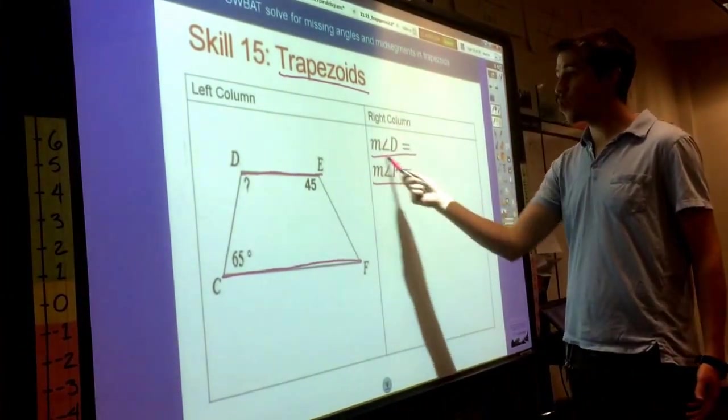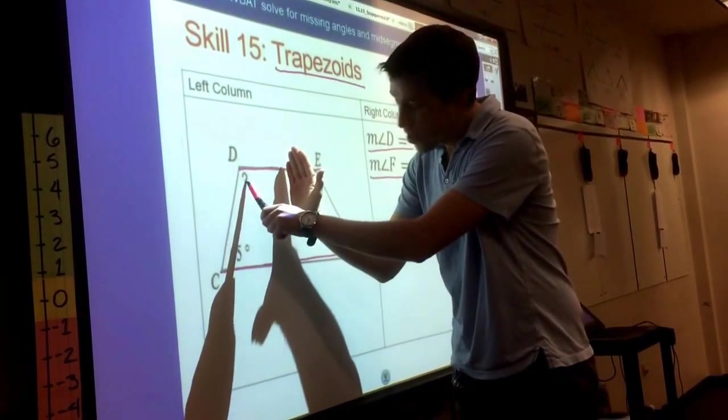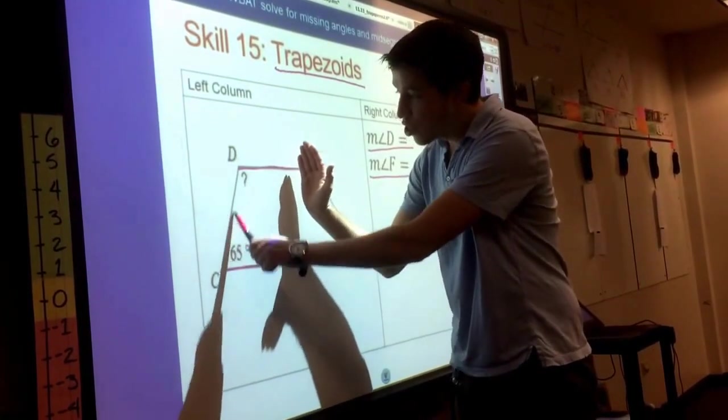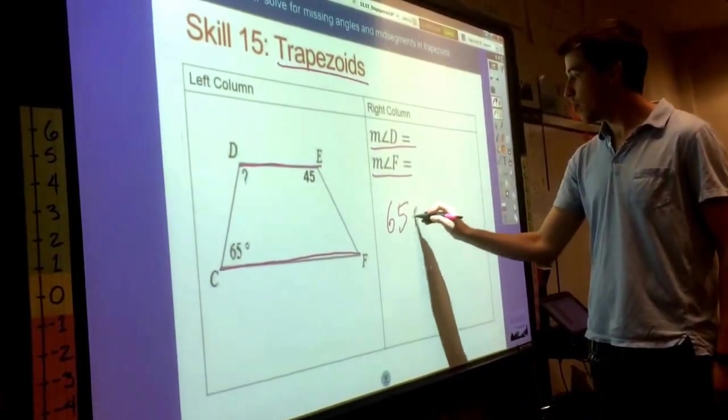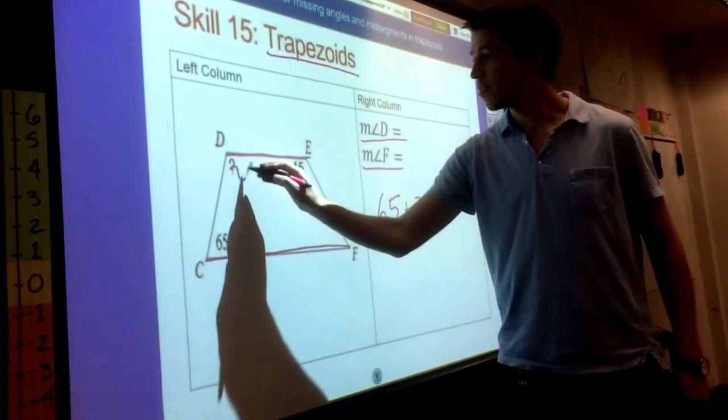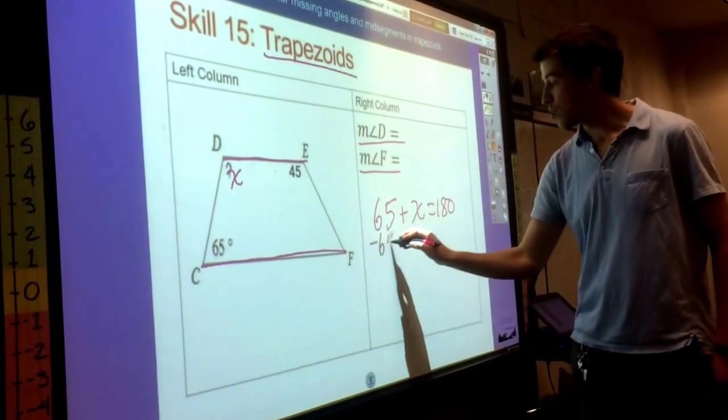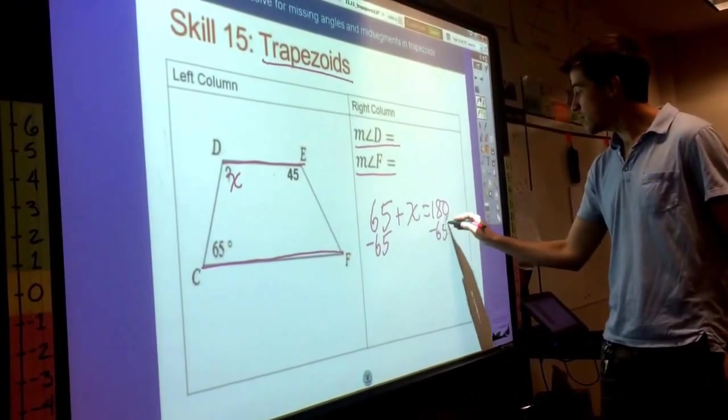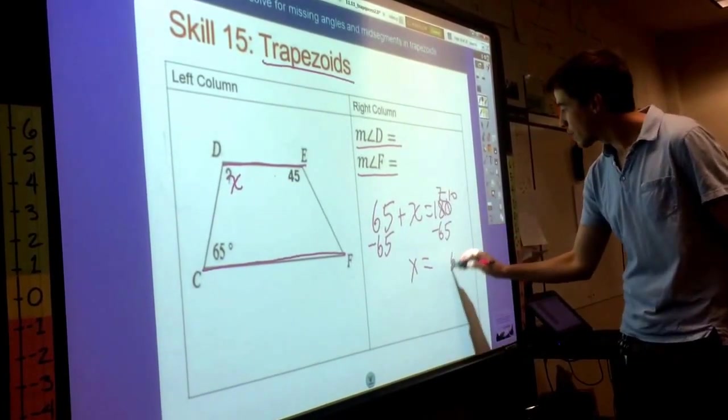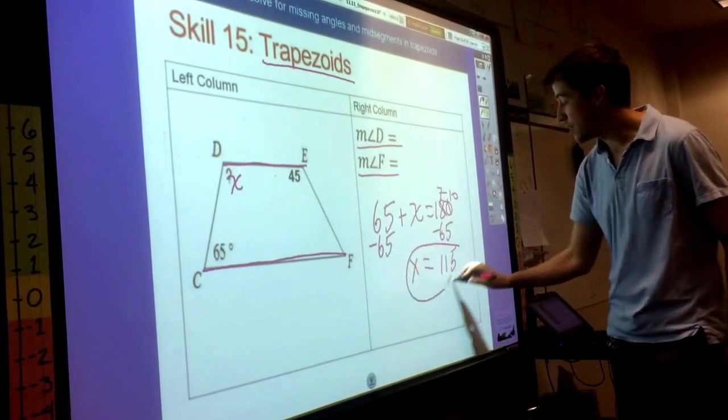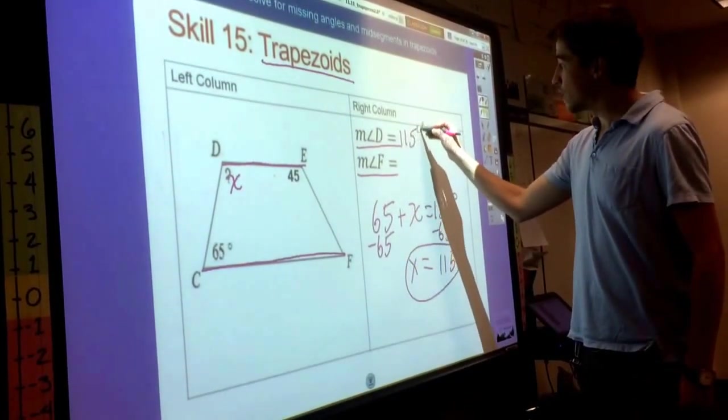So to find the measure of angle D, I'm going to find the other angle that's on the other base, and those two have to add up to 180. So 65 plus X has to equal 180. I'll just subtract my 65 from both sides, and we'll get that X is equal to 115 degrees, which means that angle D is 115 degrees.